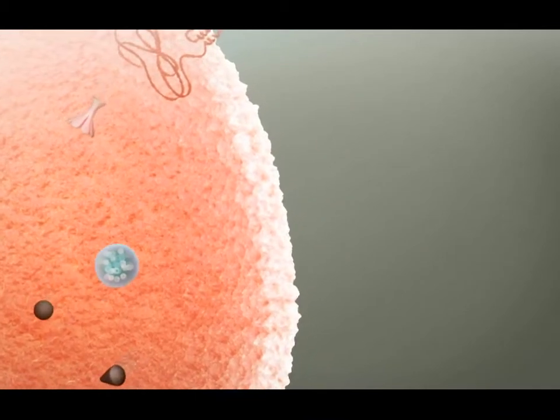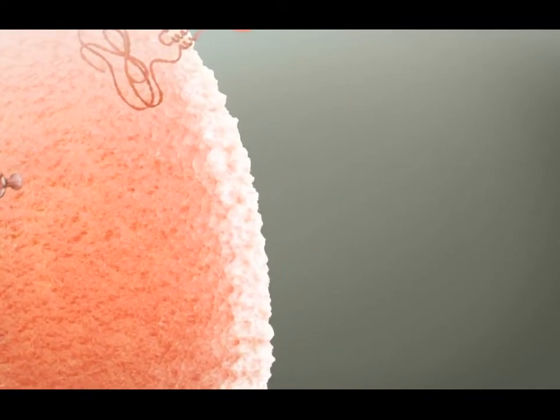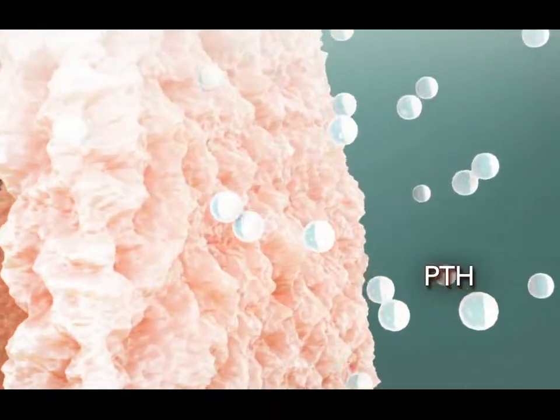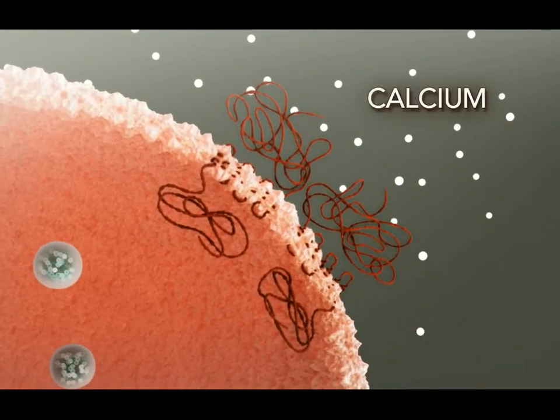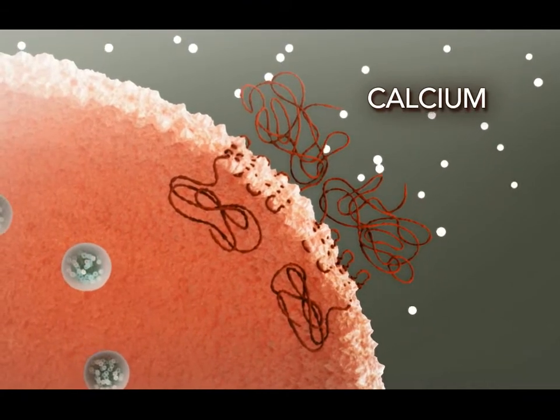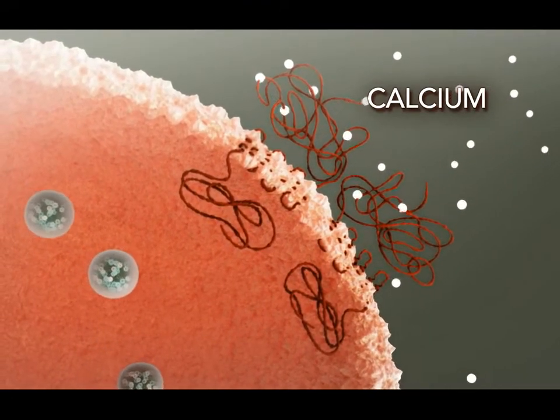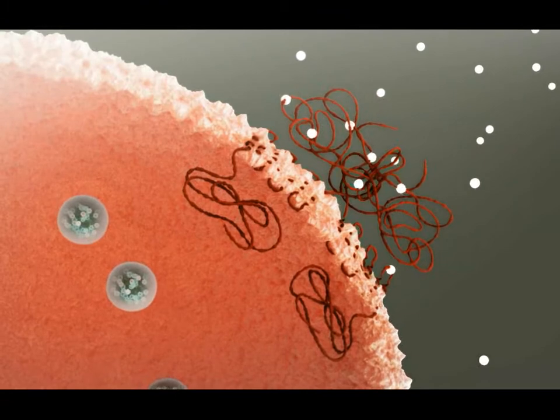When calcium is not bound to the calcium-sensing receptor, vesicles move to the cell membrane and release their stores of PTH. As the calcium-sensing receptor is activated by increased serum calcium levels, PTH secretion from the vesicles is inhibited.